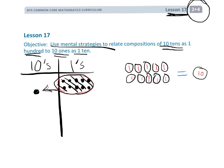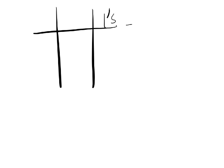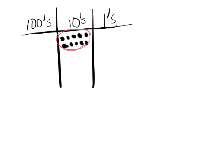Similarly, we can do the same concept with the tens — if you had 10 tens, they could be cashed in for 100. Let's show that with another place value chart. Here's our ones, our tens, our hundreds. If we have 10 tens — 1, 2, 3, 4, 5, 6, 7, 8, 9, 10 — those 10 tens can be exchanged for 1 hundred. These 10 would go away because you've cashed them in for a single dot in the hundreds column. That's kind of like taking 10 dimes and exchanging them for a dollar bill — that's like 10 tens equals 100.